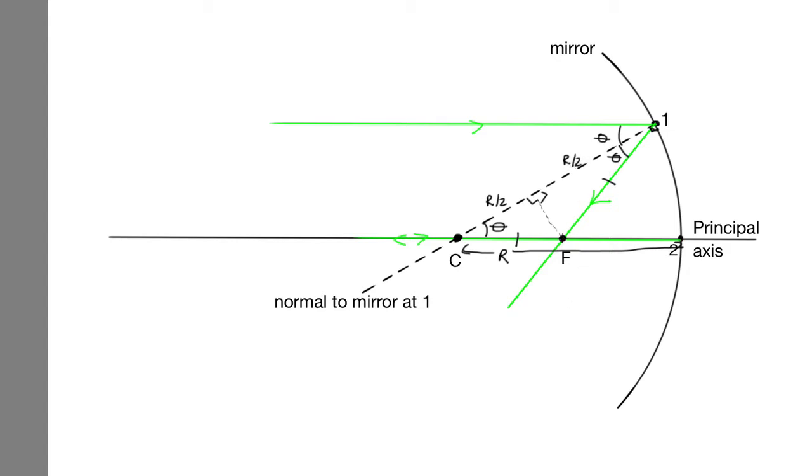Now, what we're trying to work out is how far is this focal length from this mirror here. To do that, what we can look at is this triangle here. Let's go around the triangle in red. So we're looking at this triangle now. And for that triangle, cos theta is equal to r over 2, the adjacent over the hypotenuse, which is CF. And so rearranging this, we can see that CF is equal to r over 2 divided by cos theta.